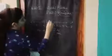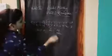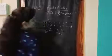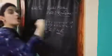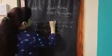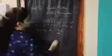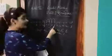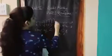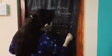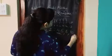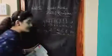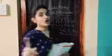1, 2 — toh bachho, kaun sa number aaya? 6. Toh 4 ke baad hum likhenge 6. Ab hum number 6 par hain. Toh ab hum 6 se 2 step aur aage badhenge: 6 to 7, 7 to 8. Toh 2 steps ke baad kaun sa number aayega? 8 to 9, 9 to 10 — number 10. 10 ke baad 10 to 11, 11 to 12. Toh ye hai hamaara answer.